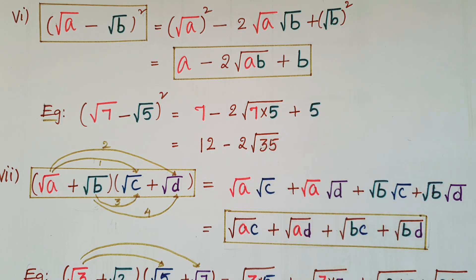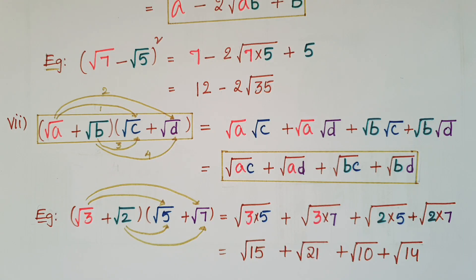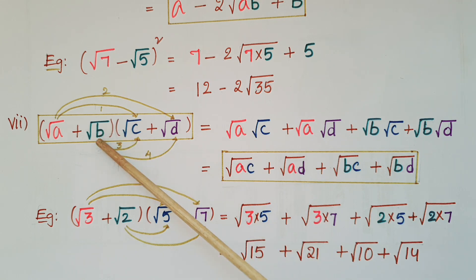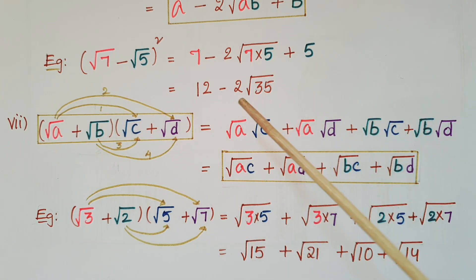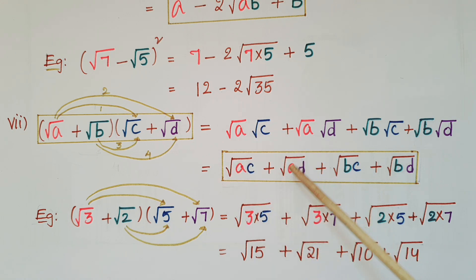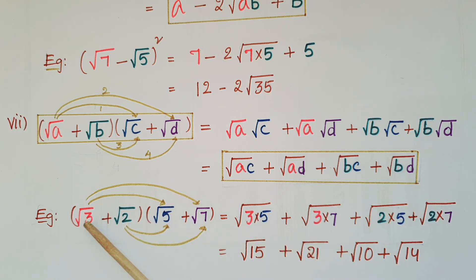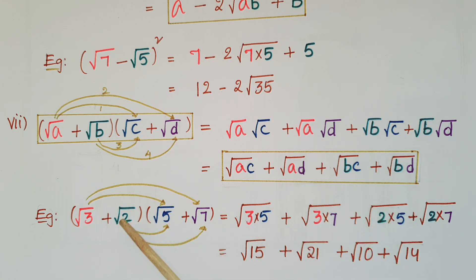The seventh one: (root a + root b)(root c + root d). Multiply each term: root a·root c + root a·root d + root b·root c + root b·root d = root(ac) + root(ad) + root(bc) + root(bd). For example, (root 3 + root 2)(root 5 + root 7) = root(3×5) + root(3×7) + root(2×5) + root(2×7) = root 15 + root 21 + root 10 + root 14.